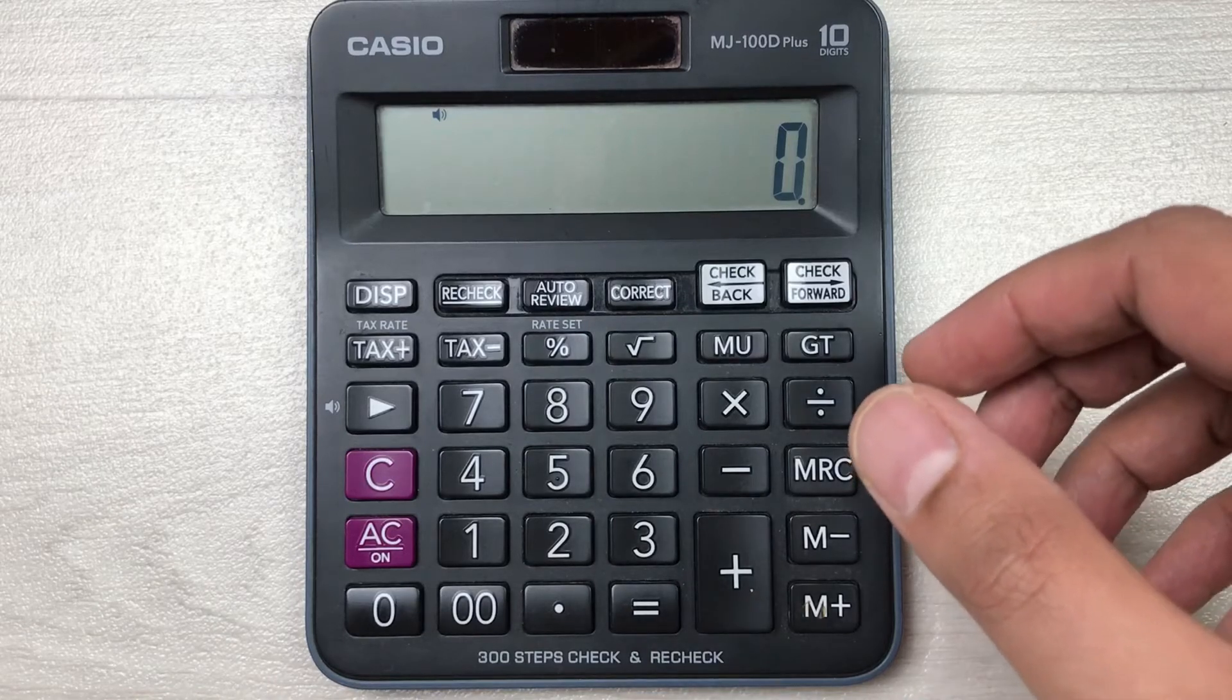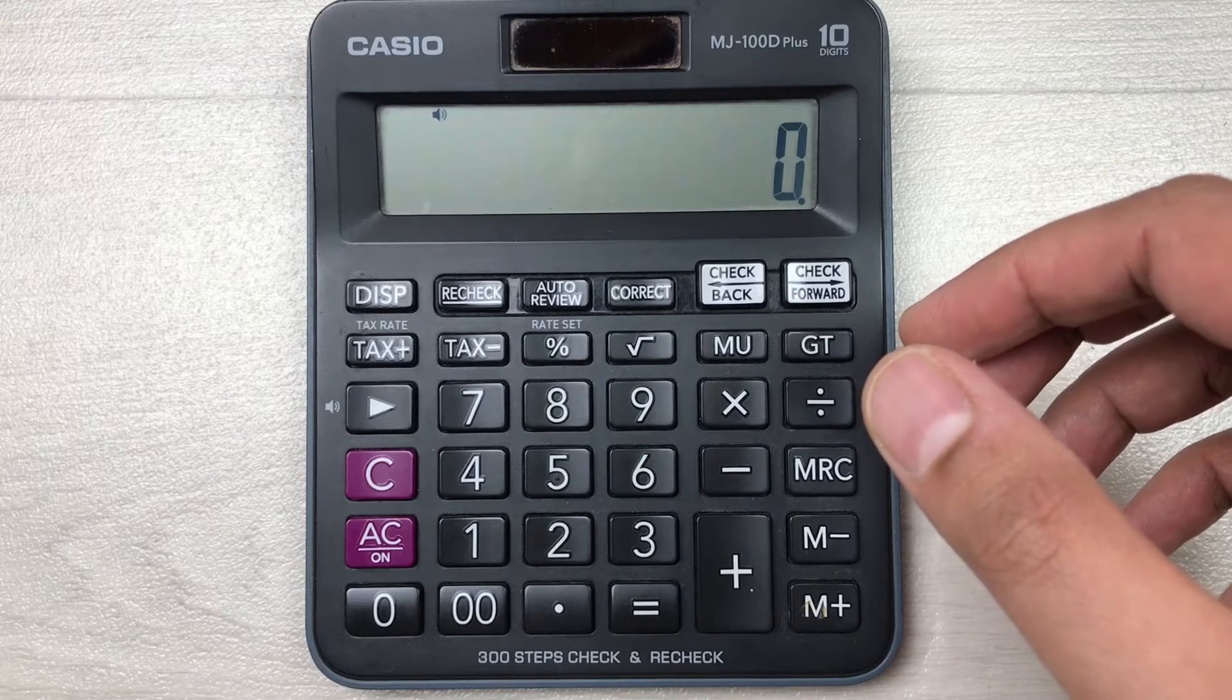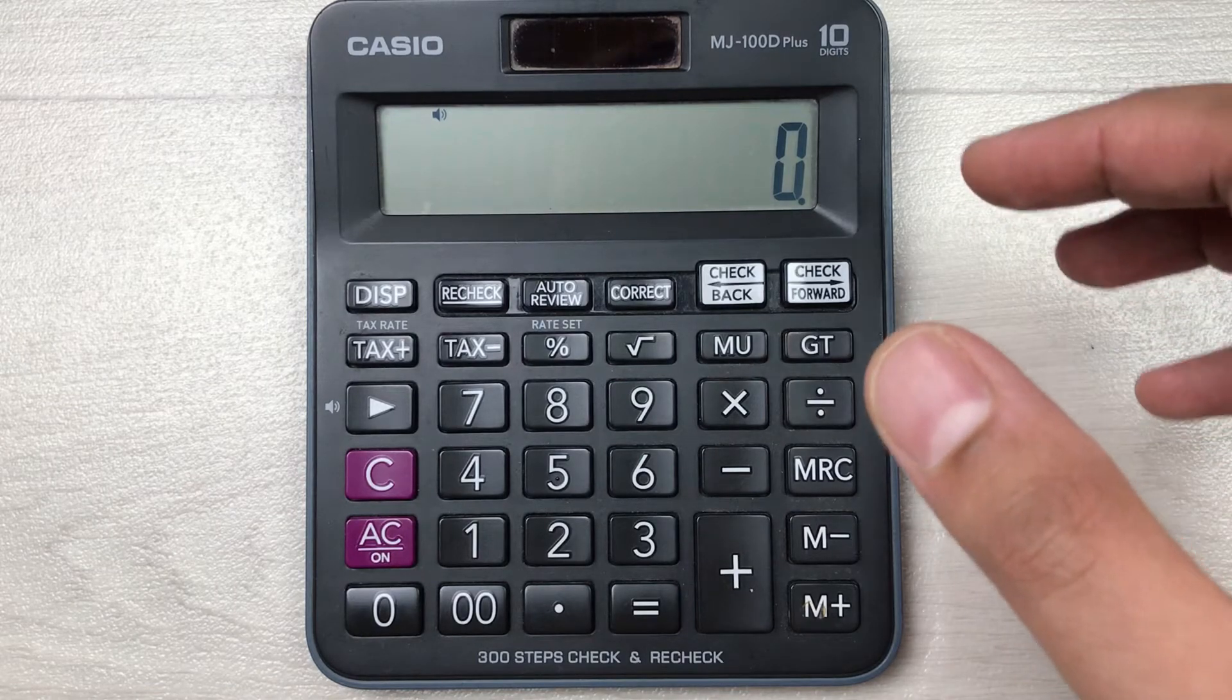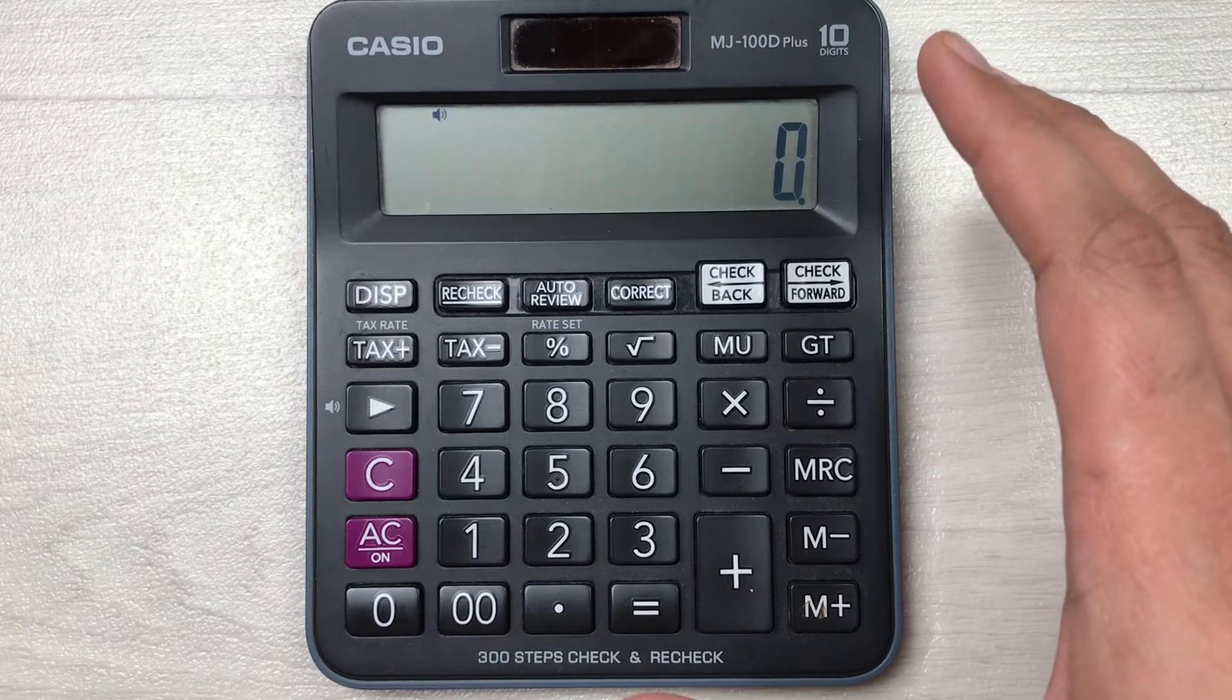Hello guys, I hope you are doing well. In today's video, I am going to show you how to calculate 5% of a price on your calculator. For example, we have an item and the price of that item is 4960.